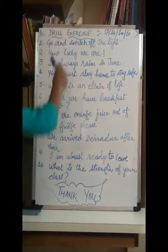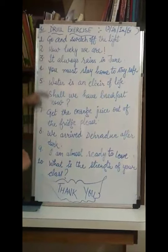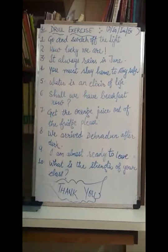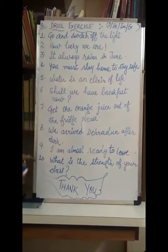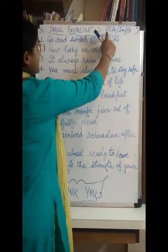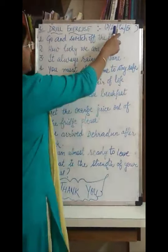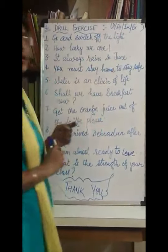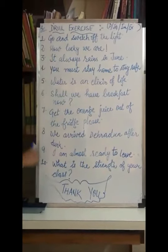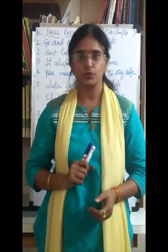This brings us to the drill exercise. As mentioned in the objectives, at the end of the three objectives you will be given one drill exercise. You are given ten sentences to identify. Write 'D' for declarative, 'IN' for interrogative, 'IM' for imperative, and 'EX' for exclamatory. You can pause the video and write down all ten sentences in your notebook. I believe this video was very helpful to you. Thank you.